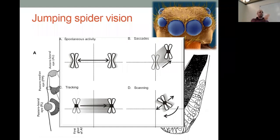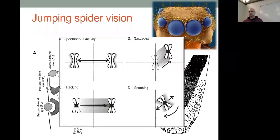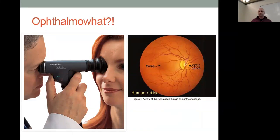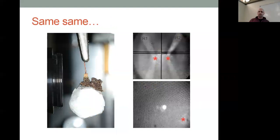I now have an aggregated dataset from all spiders across multiple species, which I can use for papers I'm writing. The first result is a heat map — a density map showing how often the fovea centers on each point of the stimulus. We can see they focus mainly on the primary eyes, the secondary eyes, and a little bit around the legs. There's also an interesting region I have two explanations for.